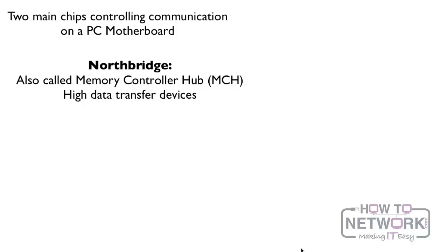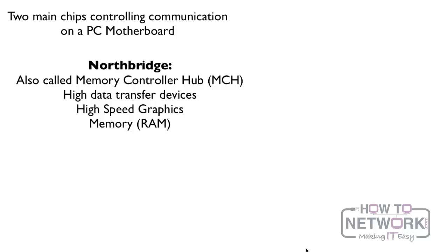Think 'North — high' — it's going to be responsible for high transfer devices. The two main high data transfer devices are high-speed graphics and memory, or RAM — random access memory. These two items need the fastest communication to the CPU, the brain of the computer.